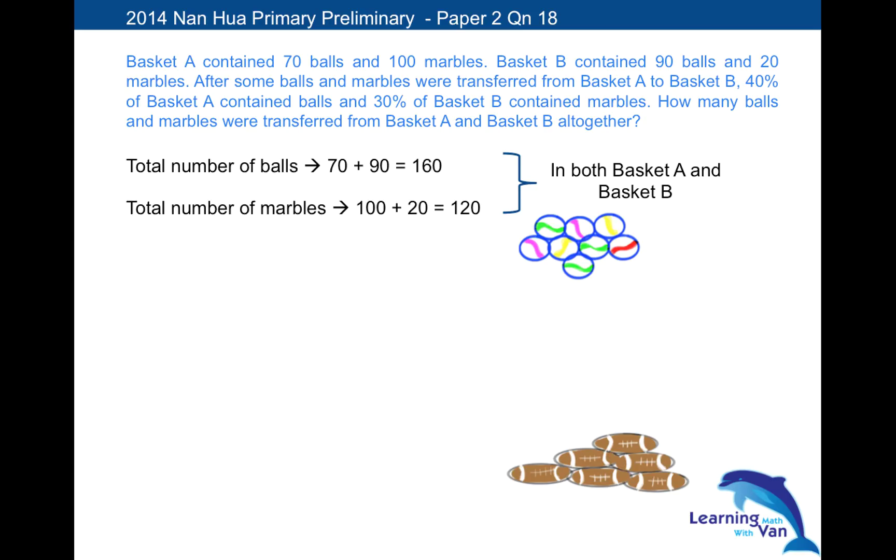So the next thing is to work out what is the total number of balls and marbles in basket A. In this question, there is no direct relationship between the total number of balls and marbles in basket A with that of basket B. So there's no way we can use units for basket B too. So if you've decided to use units for basket A, students must use parts for basket B. And of course, how many units would you assign for basket A? Looking at the percentage, 40%. So 40 out of 100 reduced to its simplest form is actually 2/5. So naturally, students will say the total number of balls and marbles in basket A is 5 units.